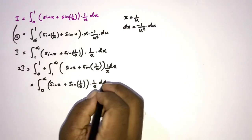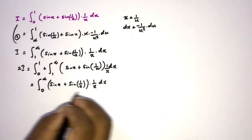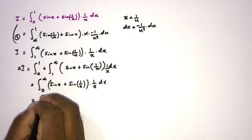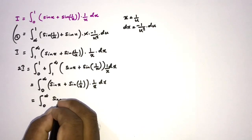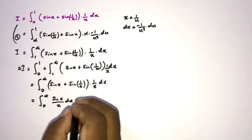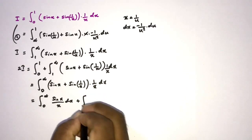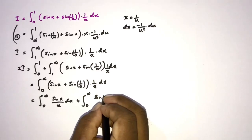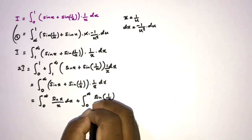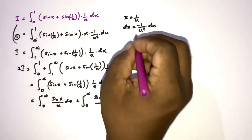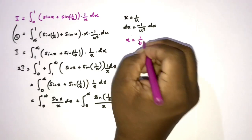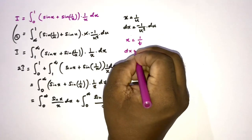We split this into two integrals: 2I equals the integral from 0 to infinity of sin(x)/x dx, plus the integral from 0 to infinity of sin(1/x)/x dx. For the second integral, we apply a substitution: let x = 1/t, so dx = −(1/t²) dt.